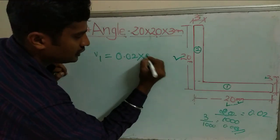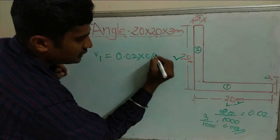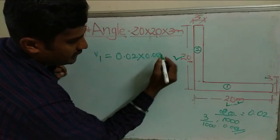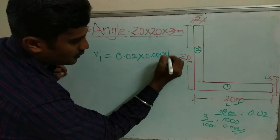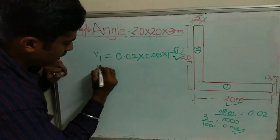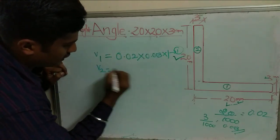So, Volume 1 = 0.02 × 0.003 × 1. That gives us Equation 1. We then move on to Equation 2 for Volume 2.